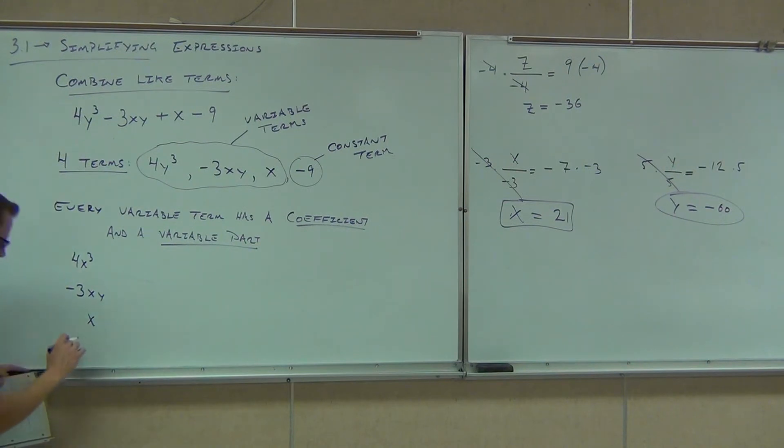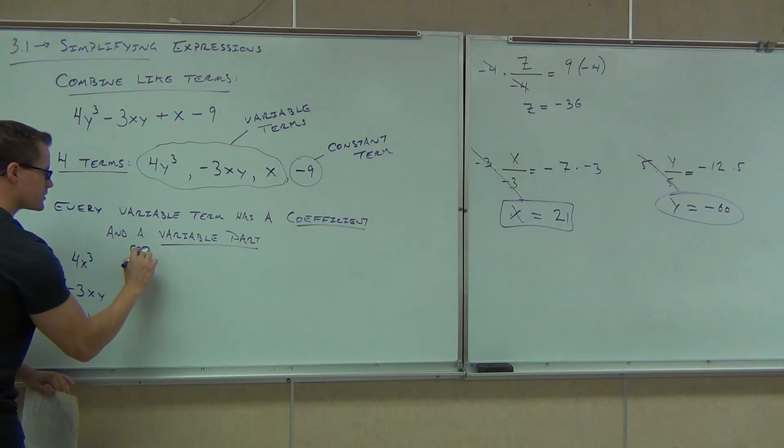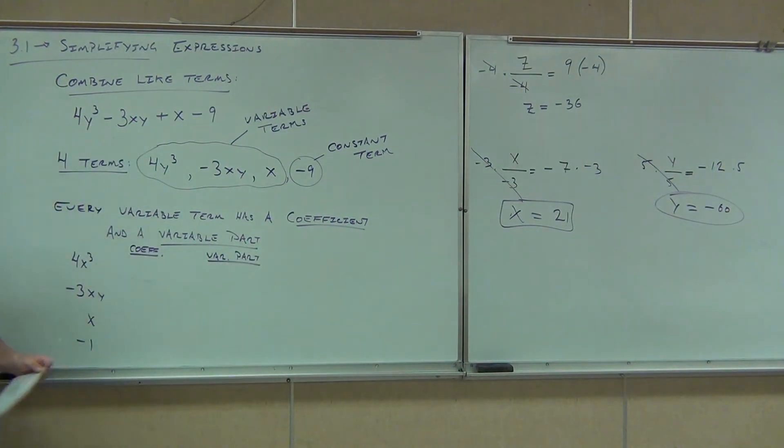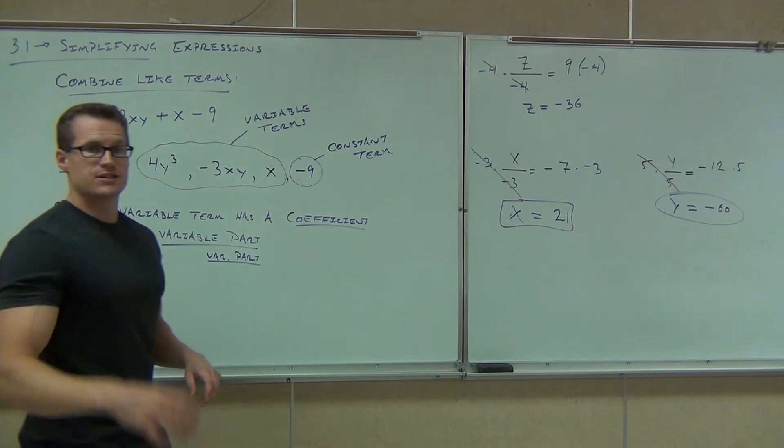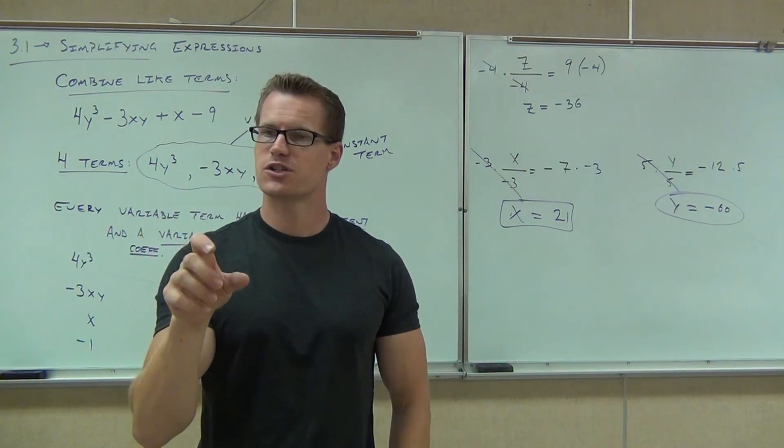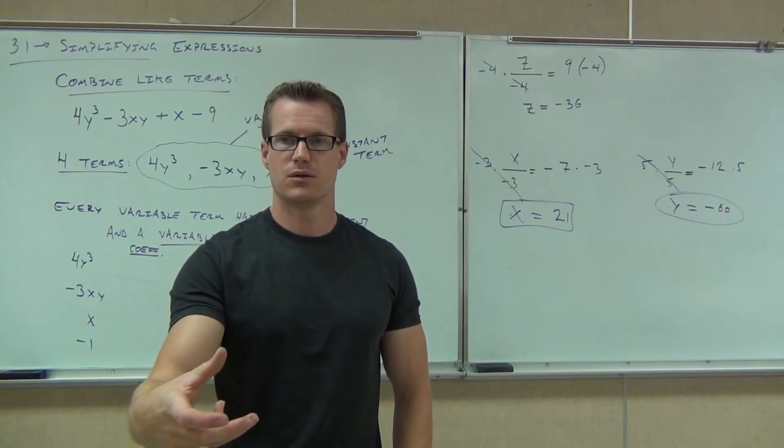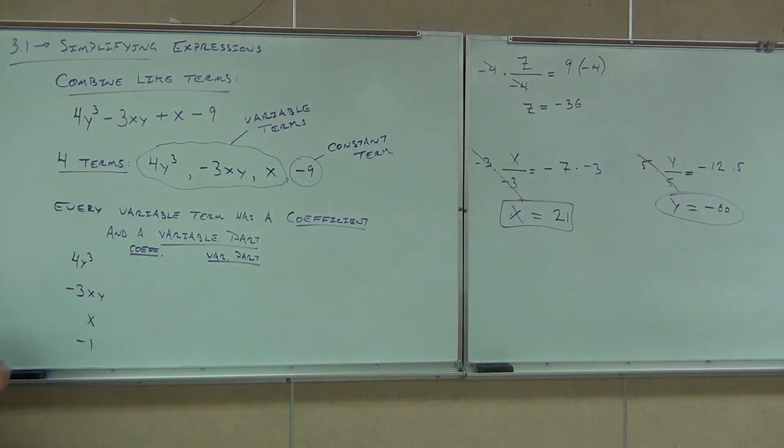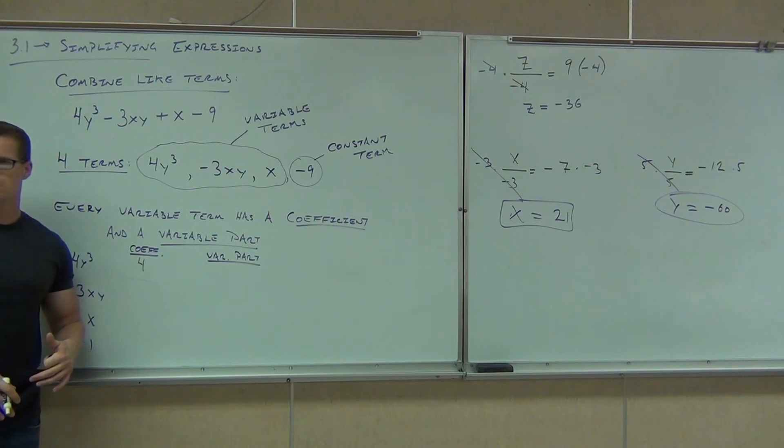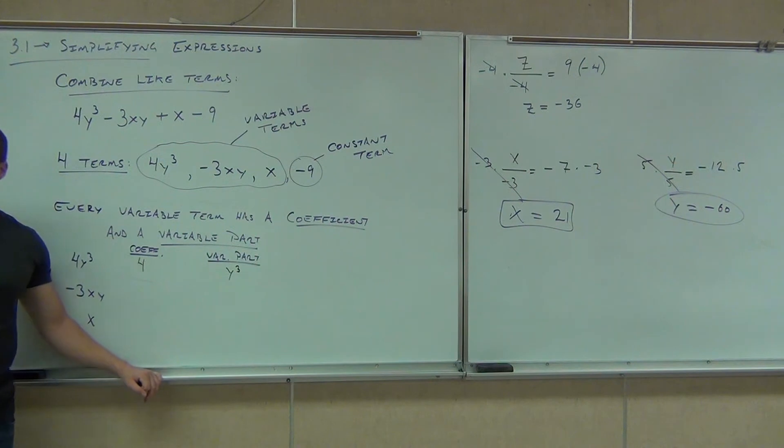So I've listed out four terms over here. Let's look at 4y cubed. That's definitely a variable term, right? Because it has a variable in it. The coefficient is simply the number in front of the variable. It's just the number itself. So the coefficient is the number that you're looking at right now. What's the number you're looking at right now? Four. That's the coefficient. It's just the number. The variable part is all the variable stuff. So what's our variable part in 4y cubed? Y cubed. That's right.